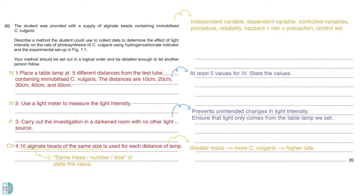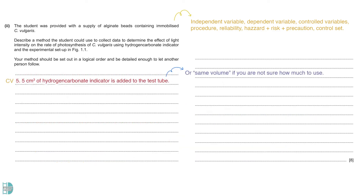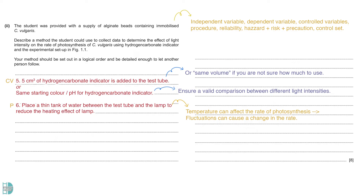A greater mass will increase the rate due to the presence of more C. vulgaris. 5 cm³ of hydrogen carbonate indicator is added to the test tube each time. If you do not know how much you should use, mention the same volume is used each time. We should check to ensure that all of the tubes have the same starting colour, so the pH is the same at the start. This is to make sure the comparison between different distances is valid. A thin tank of water can be placed between the test tube and the lamp to reduce the heating effect of the lamp. Temperature is one of the factors that can affect the rate of photosynthesis. Fluctuations of the temperature can cause a change in the rate.